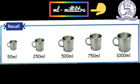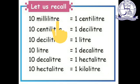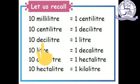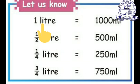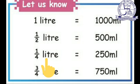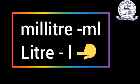Capacity is measured in milliliter and liter. The 50 ml container is very small and the 1000 ml container is larger. Let us recall: 10 ml equals 1 centiliter, 10 centiliter equals 1 deciliter, 10 deciliter equals 1 hectoliter, 10 hectoliter equals 1 kiloliter. Also, 1 liter equals 1000 ml, half liter equals 500 ml, one-fourth liter equals 250 ml, three-fourth liter equals 750 ml.